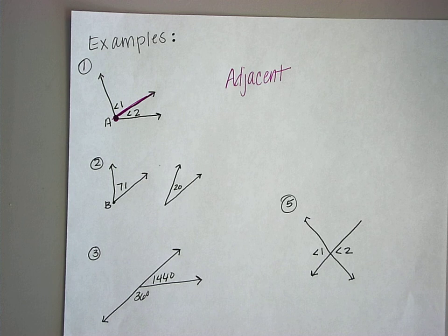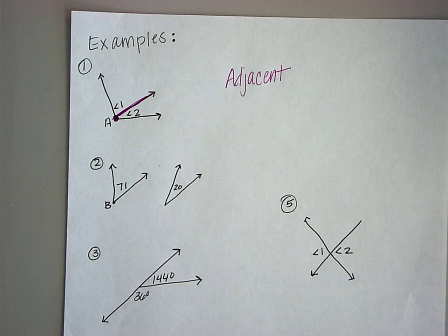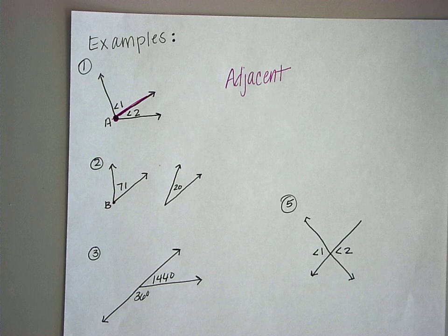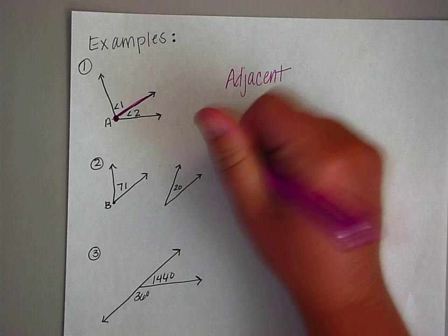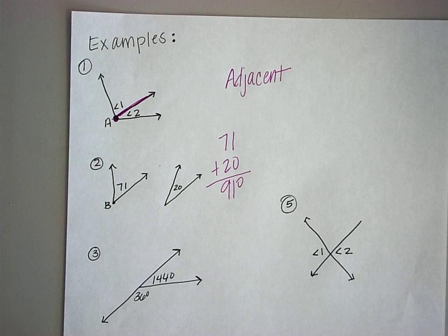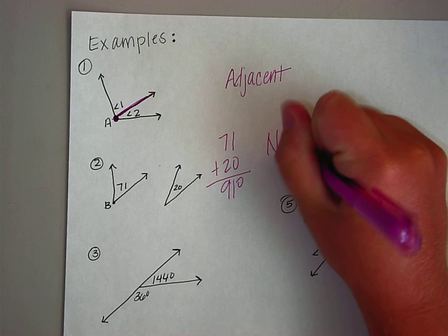For the next one, it's not adjacent because they don't share a common side. So now it's either going to be vertical, supplementary, or complementary. Are two lines intersecting each other? No. So it has to be supplementary, complementary, or it could be none. Let's add those two angles up — 71 plus 20 is 91. It has to be 90 to be complementary or 180 to be supplementary. So this is none. Sometimes you may have a none.